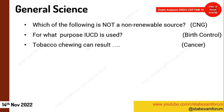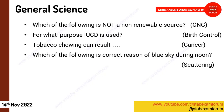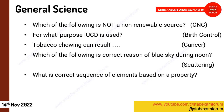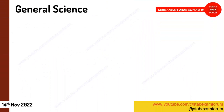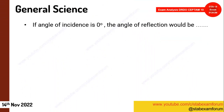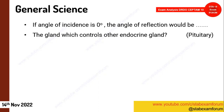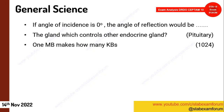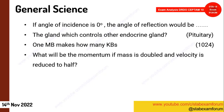Tobacco chewing causing cancer — everybody knows this. This question repeated: which of the following is the correct reason for the blue sky during noon? Answer: scattering of light. A question on sequence of elements based on some property. From optics: if the angle of incidence is zero, what is the angle of reflection? Which gland controls other endocrine glands — simple. A question similar to petabytes but in megabytes: how many KBs make one MB? Answer: 1024. A numerical on the relation between momentum when mass is doubled.